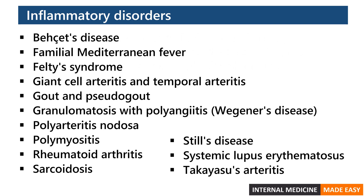Inflammatory disorders that can cause fever of unknown origin include Behçet's disease, familial Mediterranean fever, Felty's syndrome, giant cell arteritis and temporal arteritis, gout and pseudogout, granulomatosis with polyangiitis, polyarteritis nodosa, polymyositis, rheumatoid arthritis, sarcoidosis, Still's disease, systemic lupus erythematosus, and Takayasu's arteritis.